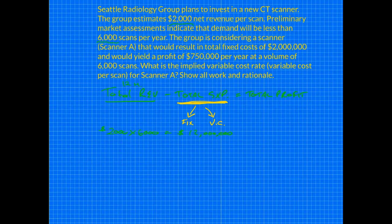We're not done yet. We've got $12,000,000 minus total expenses. Remember, expenses include fixed and variable. We do know one of those: total fixed costs are $2,000,000. So we can plug that in — minus $2,000,000. Total revenue minus fixed costs minus variable costs equals total profit. What we don't know is the variable costs — that information is not given to us.